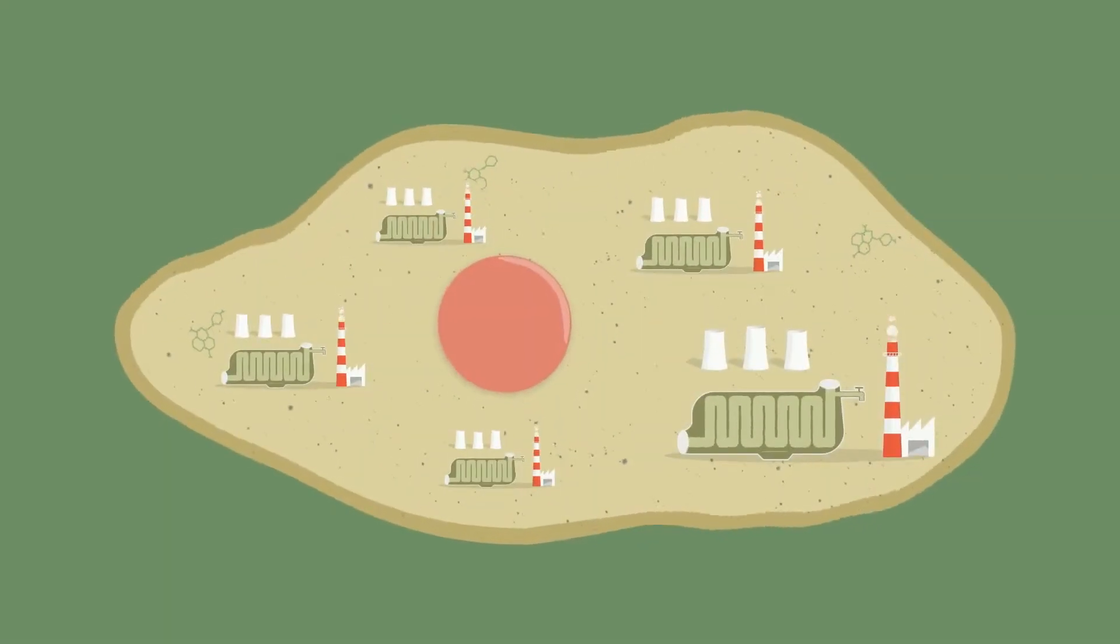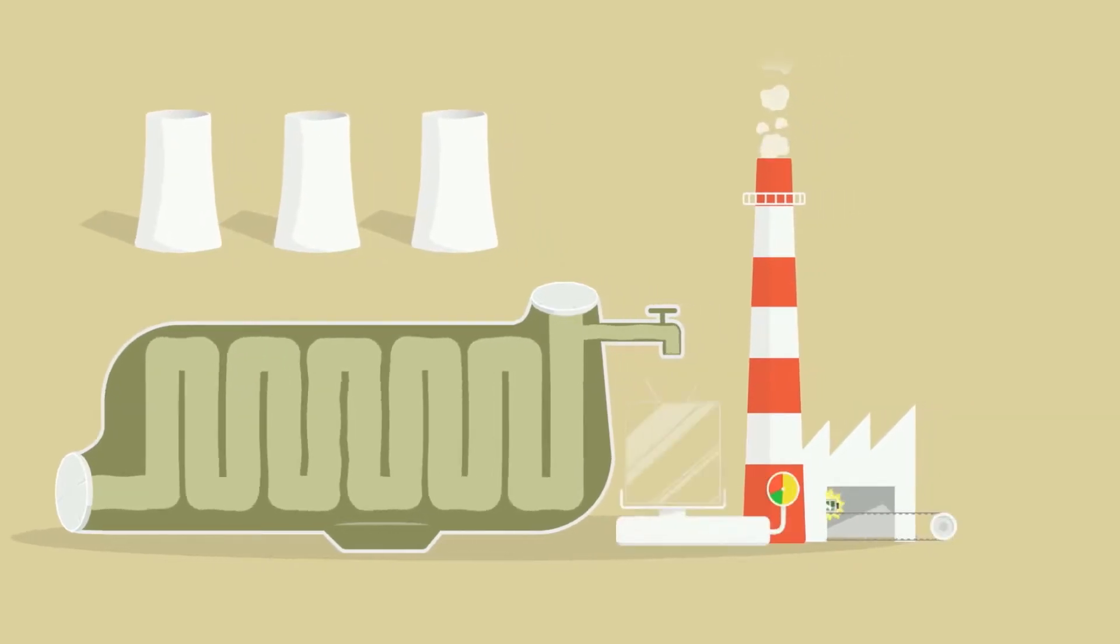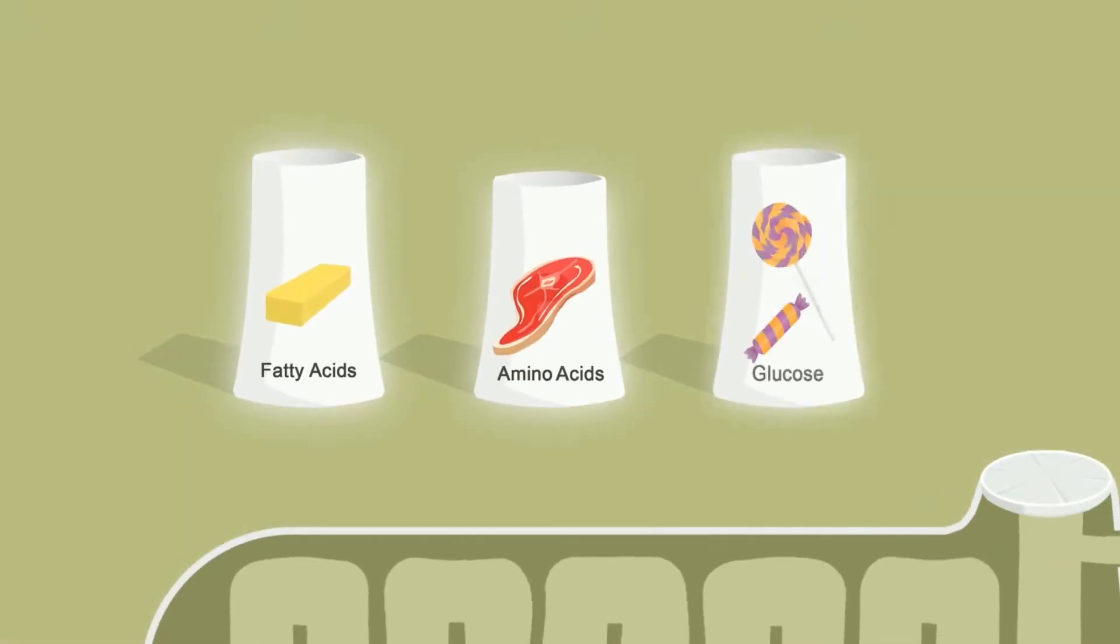Inside each of your cells are little power plants called mitochondria. They can generate ATP for your body to use as a source of energy. The energy can be generated from fatty acids, amino acids, or glucose.